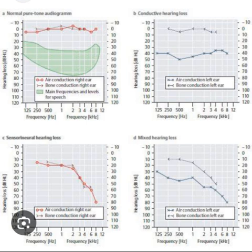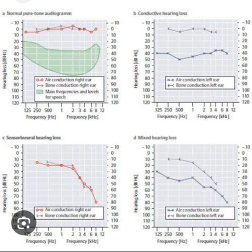Several interfering factors may complicate audiogram interpretation. First, a poor fit of earphones may cause sound leakage, invalidating results by preventing reliable independent testing of each ear. Second, if masking is not employed when indicated or the masking level is insufficient, inaccurate results may be obtained. Third, audiogram validity depends on the patient's ability to accurately and consistently indicate when they hear sounds; in functional or non-organic hearing loss, patients may report inability to hear a pure tone even if their auditory system is structurally intact.